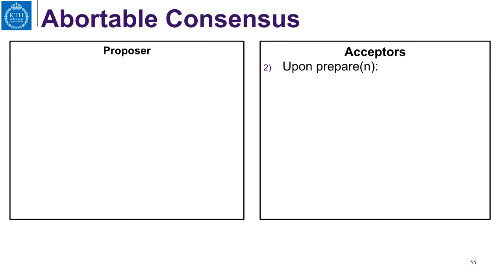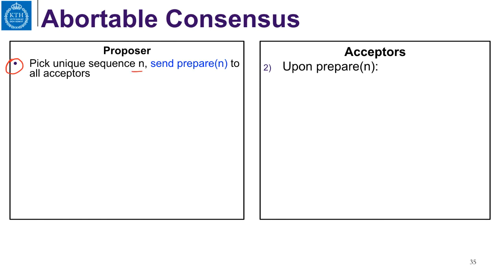Let us look now at an overview of the abortable consensus algorithm. A proposer will pick a unique sequence number — hopefully a high sequence number, higher than the one used before, otherwise it will have no effect. And the proposer sends a prepare message to the acceptors.